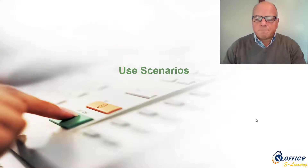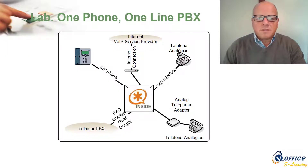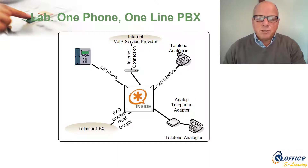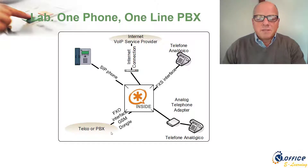In this chapter on use scenarios, we're going to show you where Asterisk is used. The first scenario is one phone, one line PBX. This is usually what you start with — you use it as a lab. You have Asterisk here, and then you have a telco or PBX.